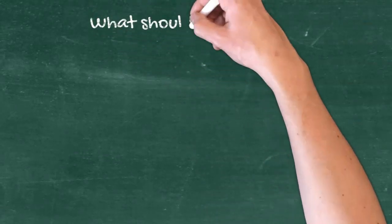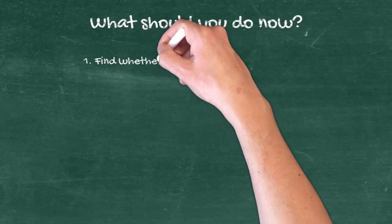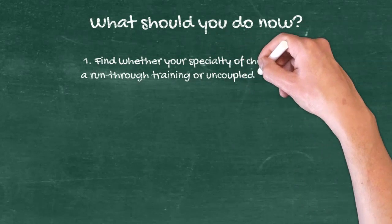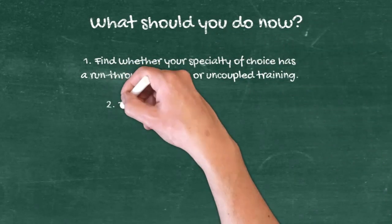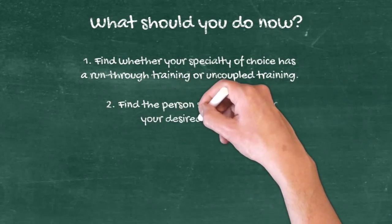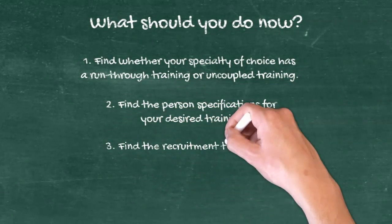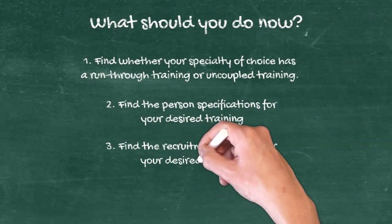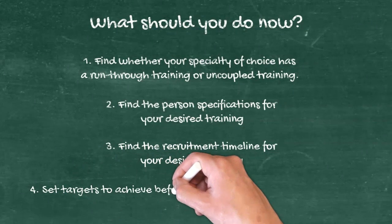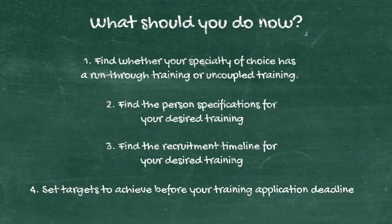So what should you do now? Your first step is to find out what your chosen specialty training is — is it run-through or uncoupled? That gives you an idea of how the whole training pathway will be structured. Then find the person specification and identify key information including overqualification or underqualification. Finally, find the recruitment timeline and make targets to achieve before your training application deadline.